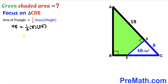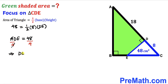Let's simplify: that gives us 4 times DE equals 48. Now we divide both sides by 4 to isolate DE. So therefore our DE side length turns out to be 12 centimeters.